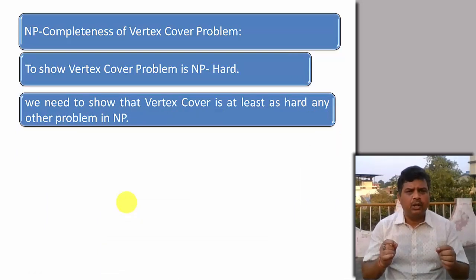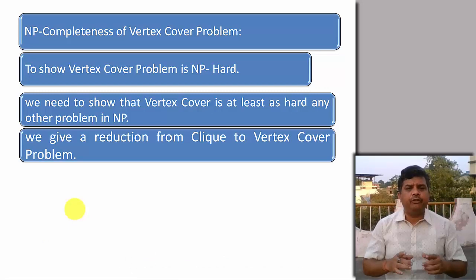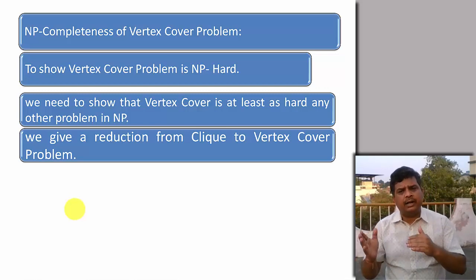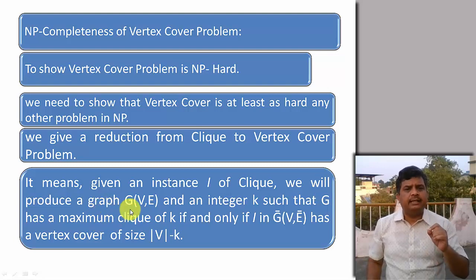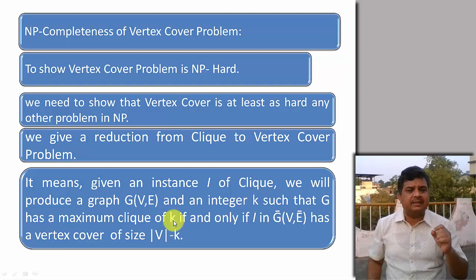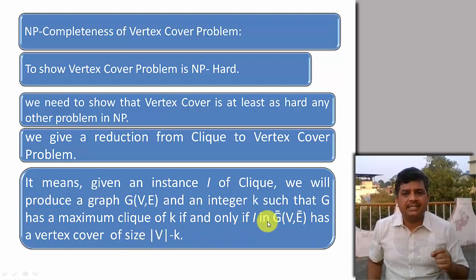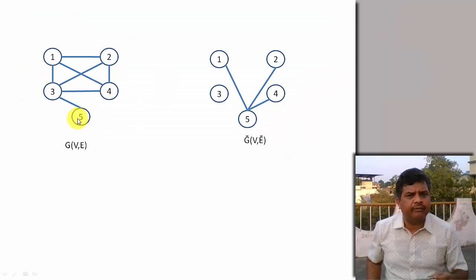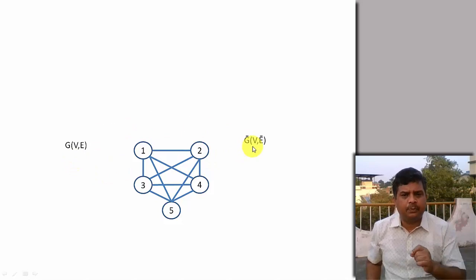To show vertex cover is NP-hard, we need a known NP-complete problem. Let us take the Clique problem. If you have not seen the video on NP-completeness of the Clique problem, kindly follow the link given above. We will take the Clique problem and reduce it to the vertex cover problem. We take an instance of Clique — a graph G(V,E) and integer k — such that G has a maximum clique of size k if and only if the complement graph G-bar has a vertex cover of size |V| minus k. G-bar is the complement of the graph — the union of G and G-bar forms a complete graph.